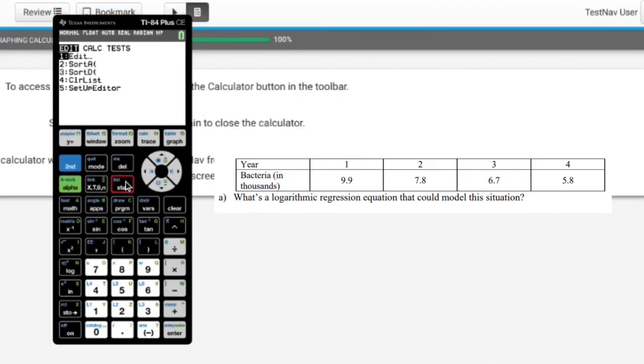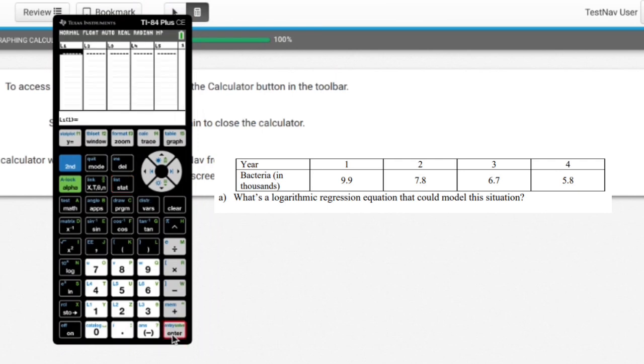All right, let's start out with doing our LNREG. We have stat edit, and I'm going to type out 1, 2, 3, 4. I think I can handle that. That matches up with 9.9, 7.8, 6.7, and 5.8.